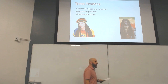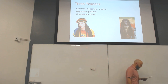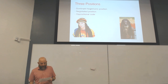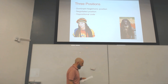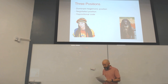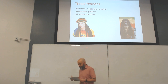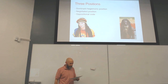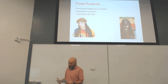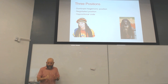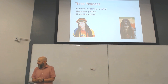Hall says on page 483: 'We say dominant because there exists a pattern of preferred readings, and these both have the institutional, political, ideological order imprinted in them and have themselves become institutionalized.' The natural reading, the dominant reading, is institutionalized — we think it's natural because it's all we become exposed to. However, there are three positions: the dominant hegemonic position, which operates within the dominant code; the negotiated position, which operates within the dominant code but creates exceptions; and the oppositional code, which decodes messages in complete opposition during moments of crisis.